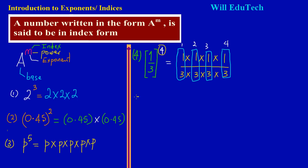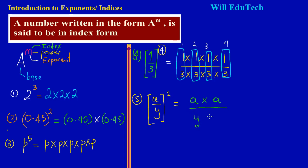In the fifth example, this also works for algebraic fractions. For example, a over y, all squared, means a in the numerator multiplies another a, and y in the denominator multiplies another y — giving us a times a over y times y. That's a over y multiplying itself twice.